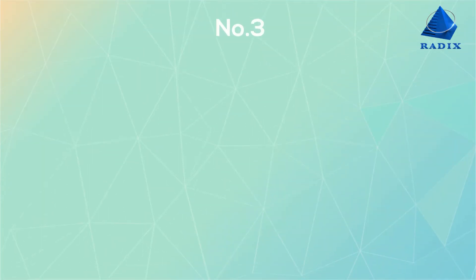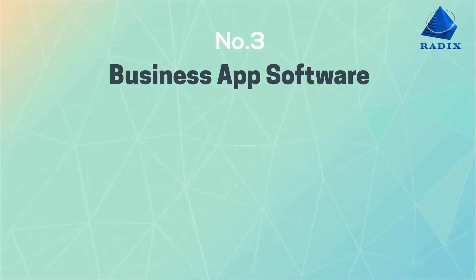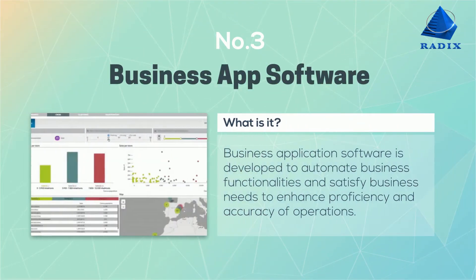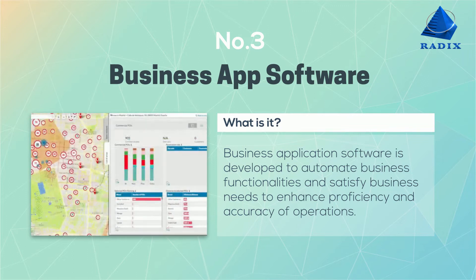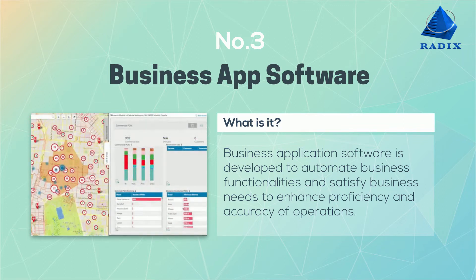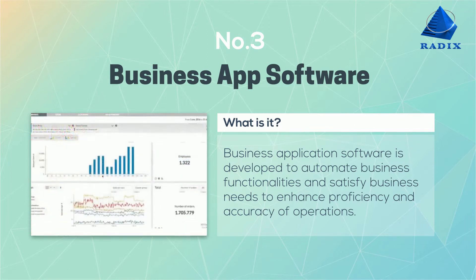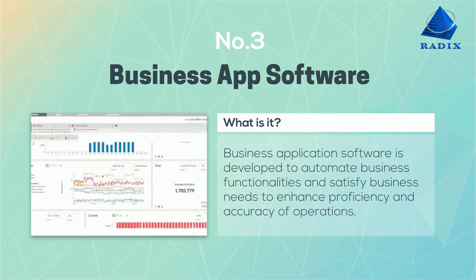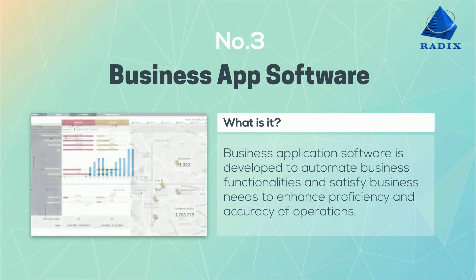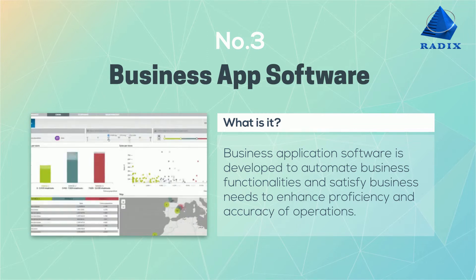Number three: business application software. Application software for business is categorized on the basis of its specific requirements. Business application software is developed to automate business functionalities and satisfy employee needs to enhance proficiency and accuracy of operations.